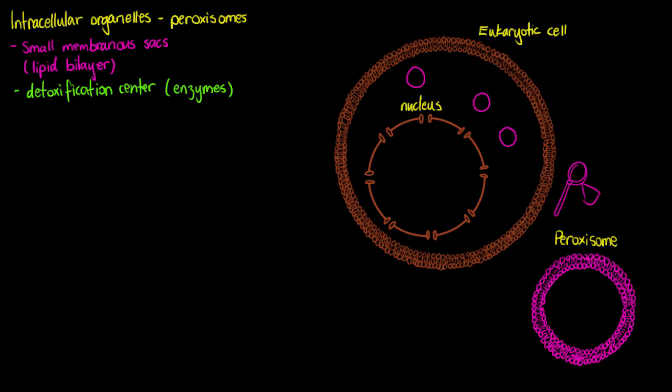And the way in which we achieve that detoxification is through the use of enzymes. The specific enzymes we're going to find a lot of in these peroxisomes are oxidases and catalases.